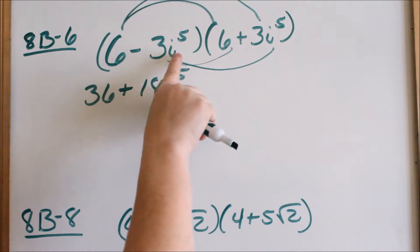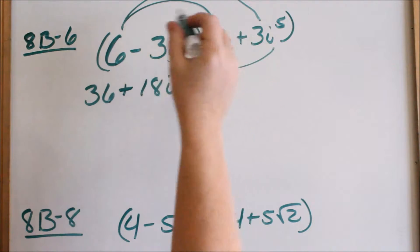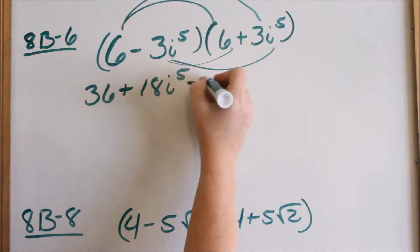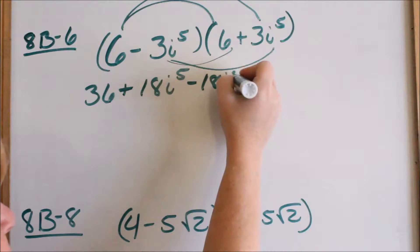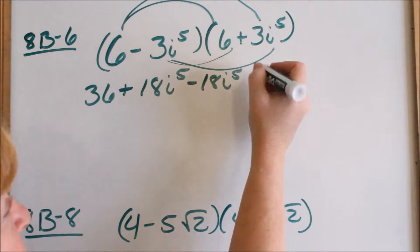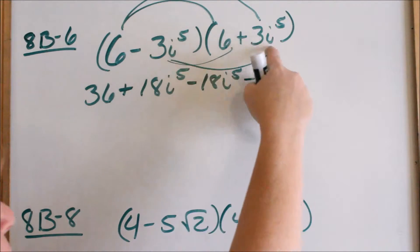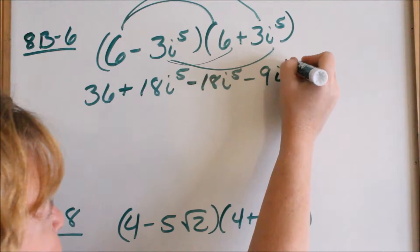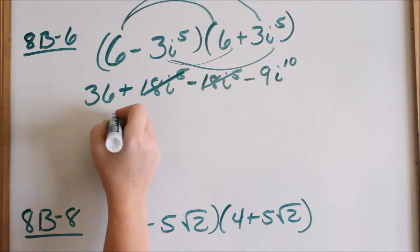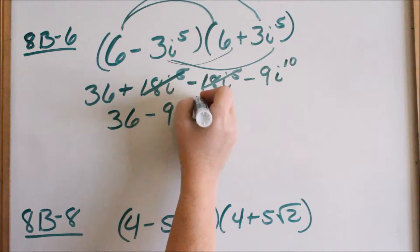I'm not going to worry about substituting anything in for i squared at this point. A negative 3i to the 5th times a positive 6 is negative 18i to the 5th. Then a negative 3i to the 5th times a positive 3i to the 5th is negative 9, i to the 5th times i to the 5th is i to the 10th. Your middle terms cancel, and I'm left with 36 minus 9i to the 10th.